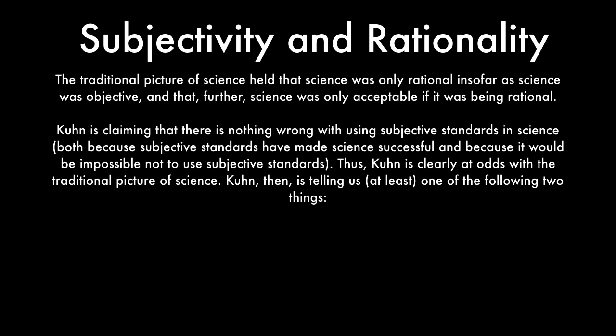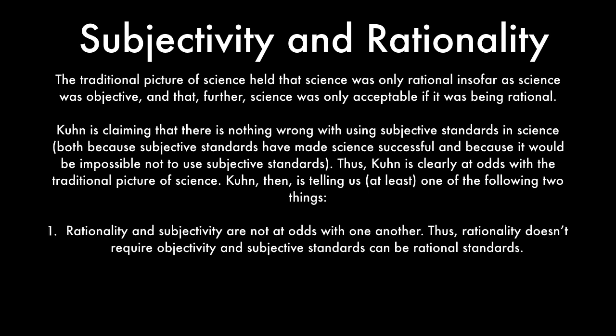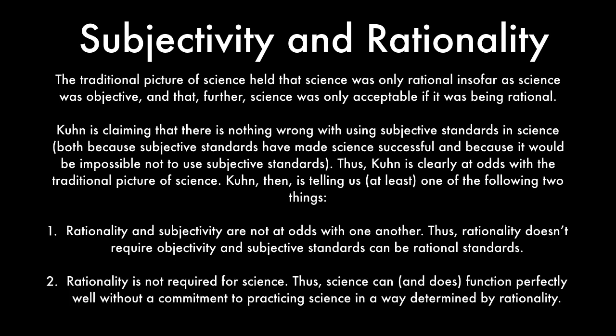Kuhn is telling us at least one of the following two things, and perhaps both. First: rationality and subjectivity are not at odds with one another — thus, rationality doesn't require objectivity, and subjective standards can be rational standards. Second: rationality is not required for science — thus, science can and does function perfectly well without a commitment to practicing science in a way determined by rationality.